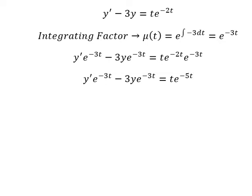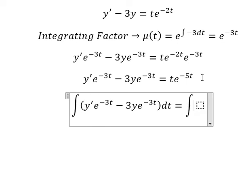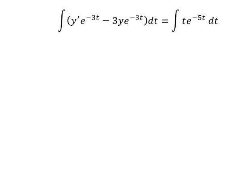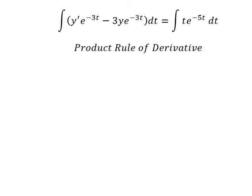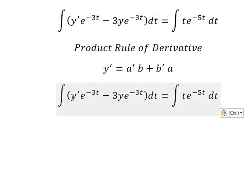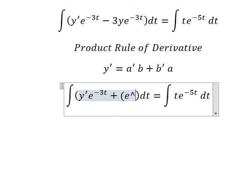Next we integrate both sides. We can use the product rule for the derivative. The first derivative of y equals the first derivative of a multiplied by b, plus the first derivative of b multiplied by a. Looking carefully, this part is the first derivative of a multiplied by b, and this part here is the first derivative of b.